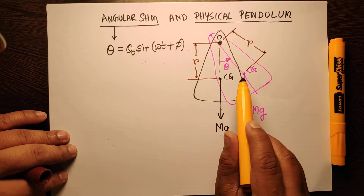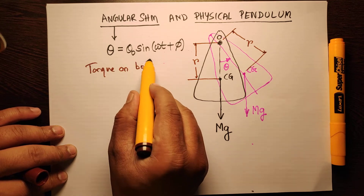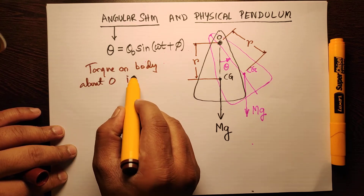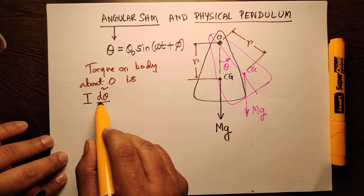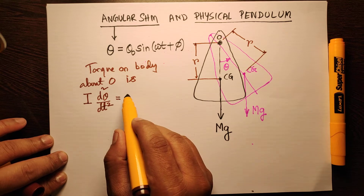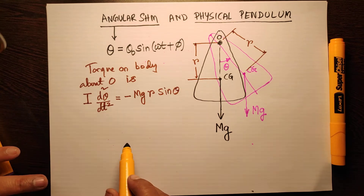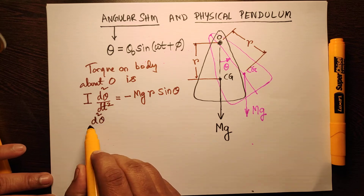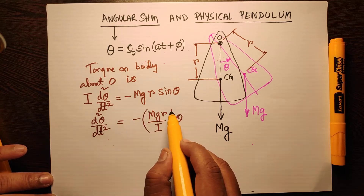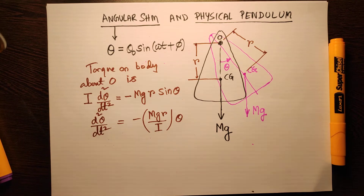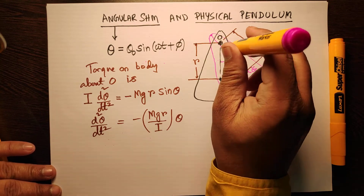At this displaced position, the torque about hinge O is: I·(d²θ/dt²) = −mg·r·sinθ. Since θ is very small, we approximate sinθ ≈ θ. So d²θ/dt² = −(mgr/I)·θ, where I is the moment of inertia of the body about an axis through O, perpendicular to the plane.